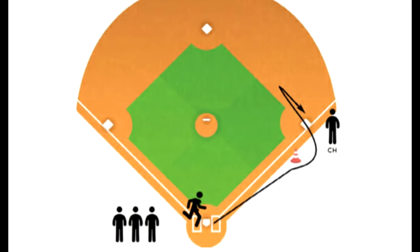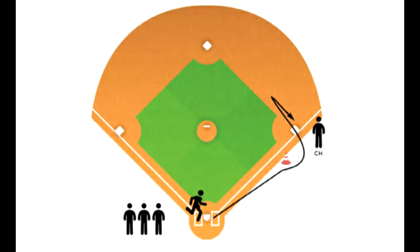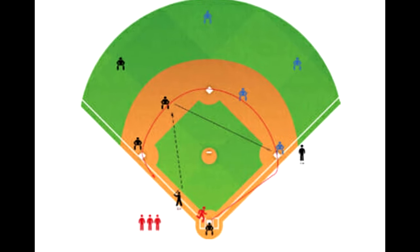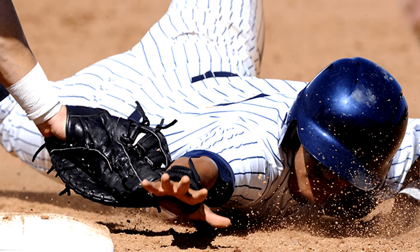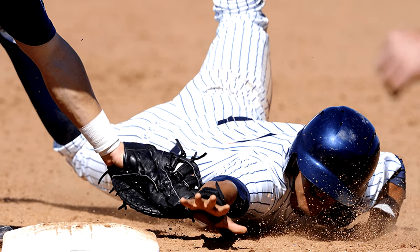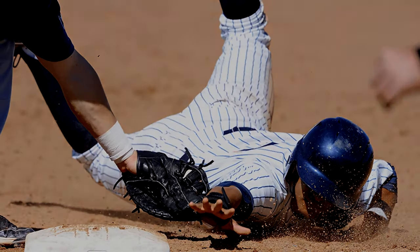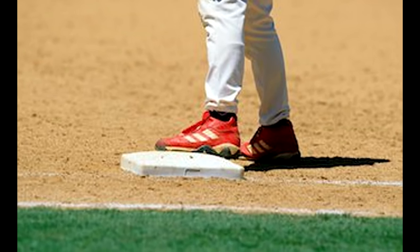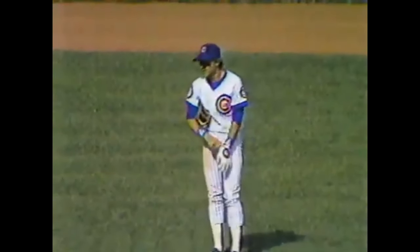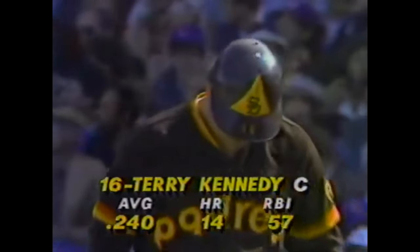Once the runner reaches first base, he does not have to run further if he does not want to. If the runner chooses to run to second base, the force is no longer in effect. At that point, a defensive player with possession of the ball will need to touch or tag the runner while the runner is not touching a base in order to get an out. While the runner is touching a base, they are considered safe and cannot be tagged out. Once an offensive player has either been called out or has settled on a base, the next batter will come to the plate for the offense and everything starts over again.